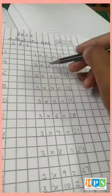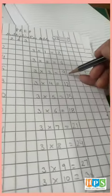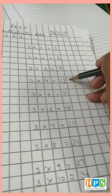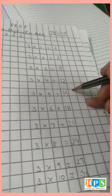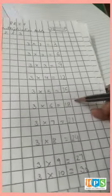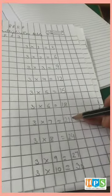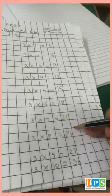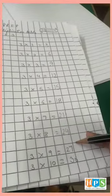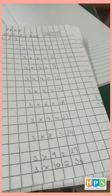3×1 is 3. 3×2 is 6. 3×3 is 9. 3×4 is 12. 3×5 is 15. 3×6 is 18. 3×7 is 21. 3×8 is 24. 3×9 is 27. 3×10 is 30.